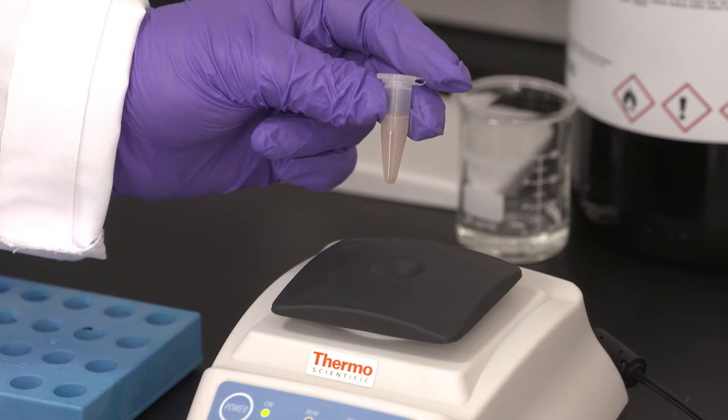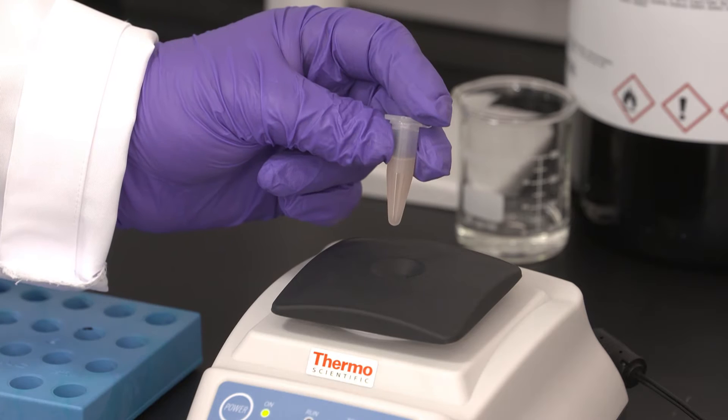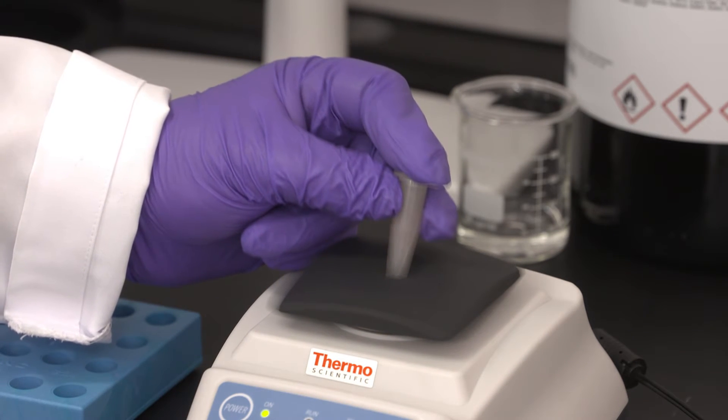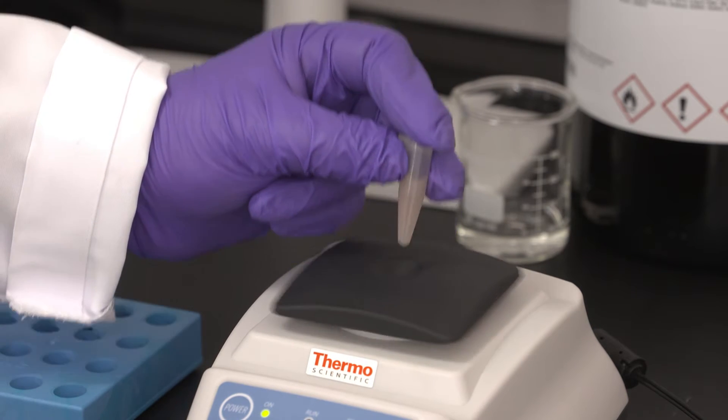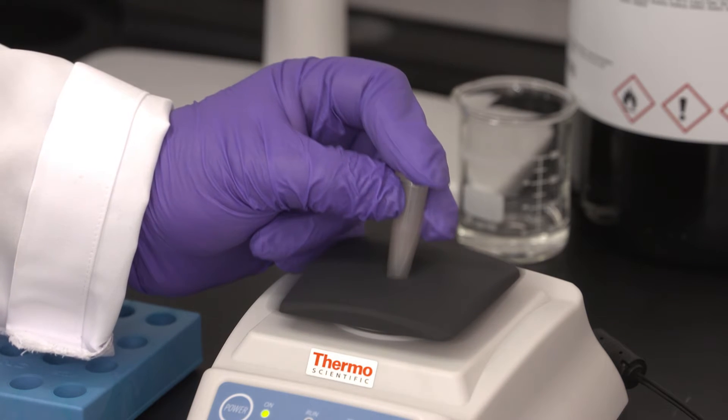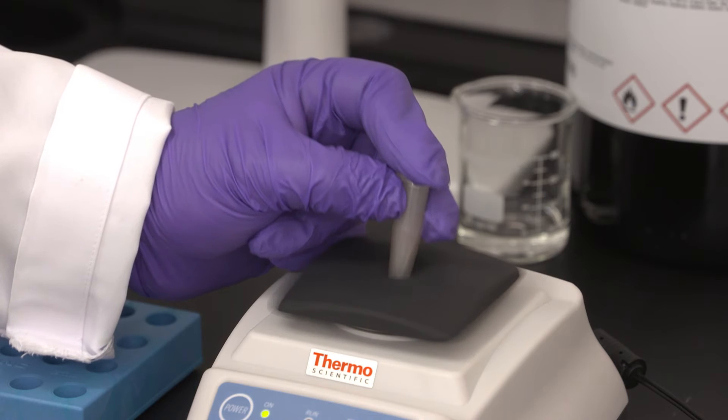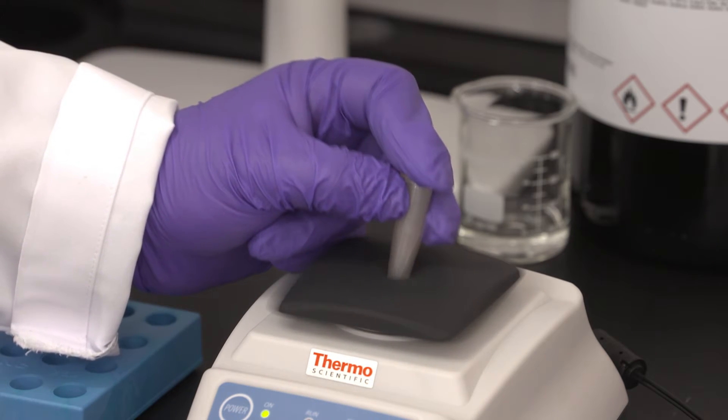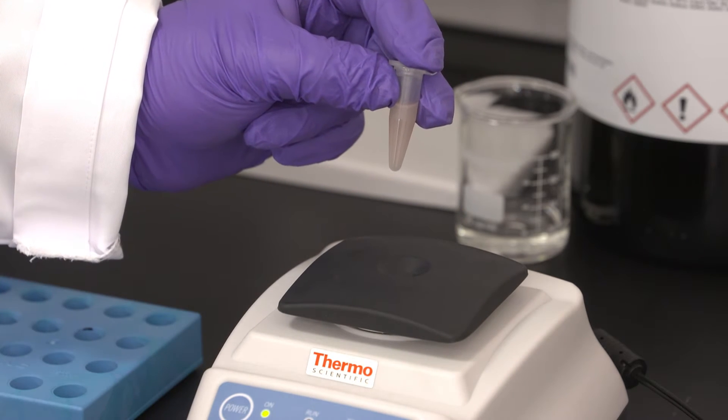The next step will be to vortex the mixture to ensure the sample is completely homogenous. We can vortex the sample for 15 to 30 seconds, or you can use a multi-vortex where you can put multiple samples and vortex for no more than 30 seconds.